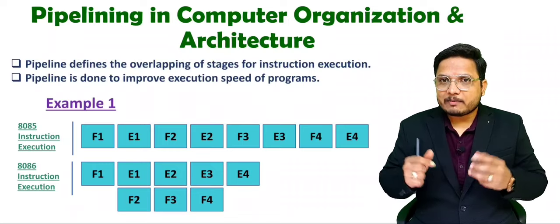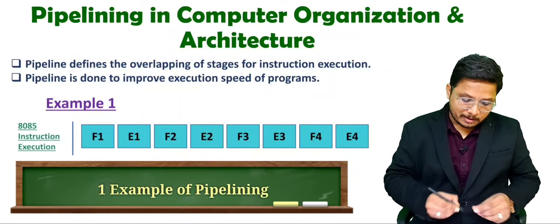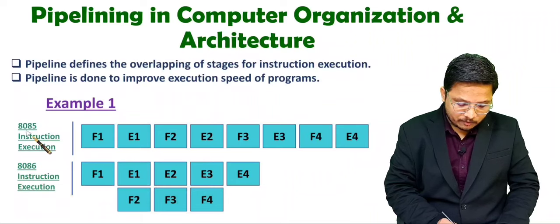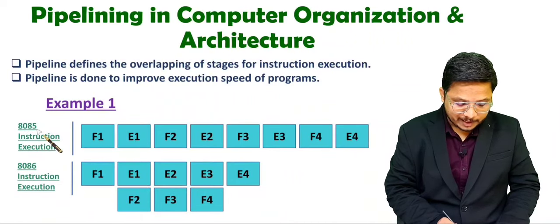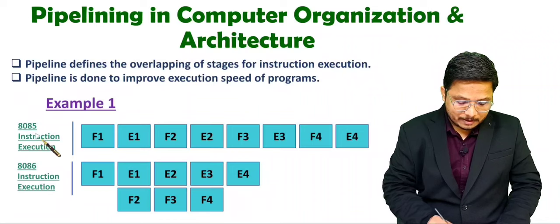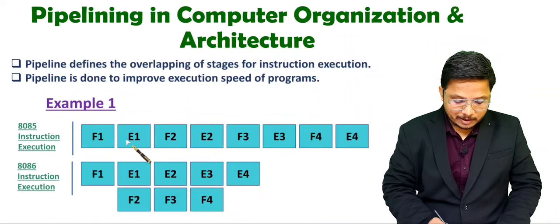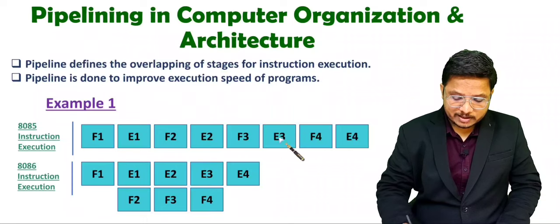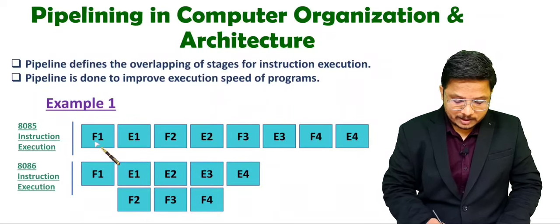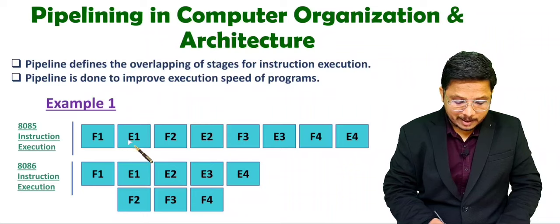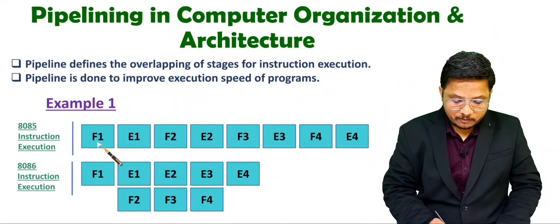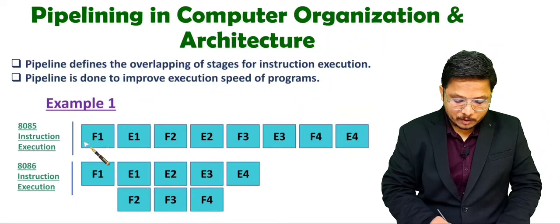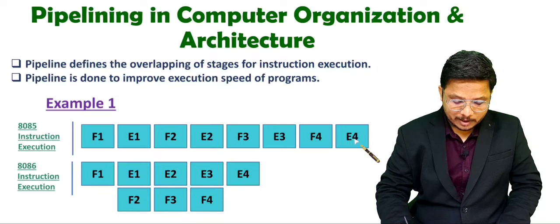Let me explain this with one example for more clarity. If you observe the very initial Intel processor, the 8085, it was executing instructions as per fetch and execute. Inside fetch it was performing two operations: fetch and decode. Here I have shown four instruction executions. The first instruction is executed as F1 E1 — F1 means fetch of instruction 1 and E1 means execution of instruction 1. Sequential execution of instructions is happening here.